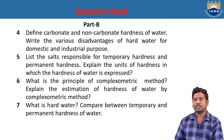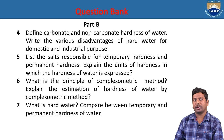Explain the estimation of hardness of water using the complexometric method. With the complexometric method, we determine total hardness first. After boiling the water, we get permanent hardness because boiling eliminates temporary hardness. Using total hardness and permanent hardness, we then calculate temporary hardness.